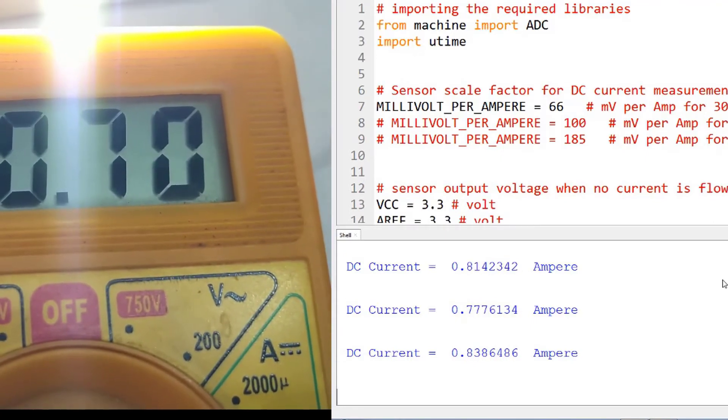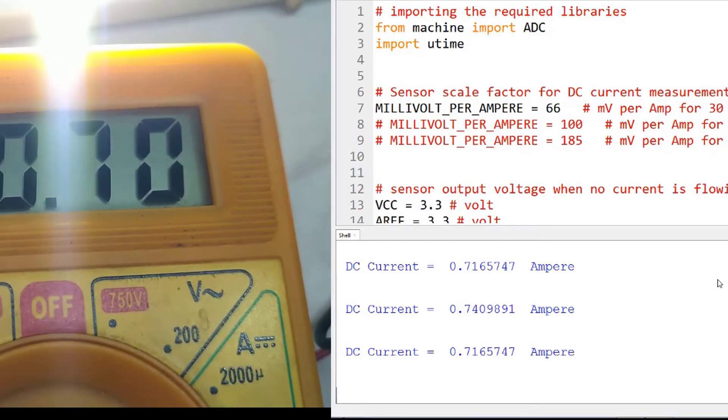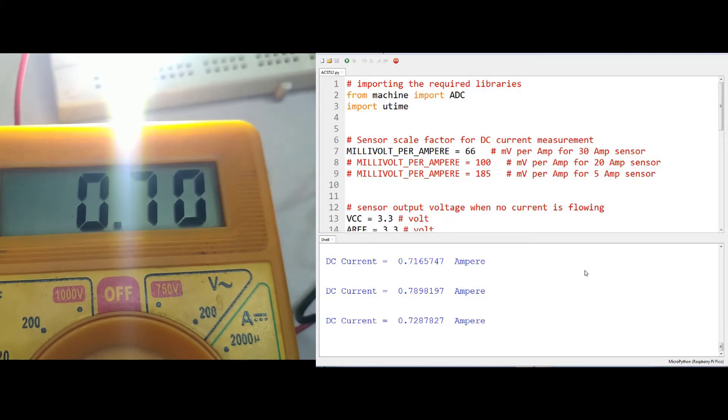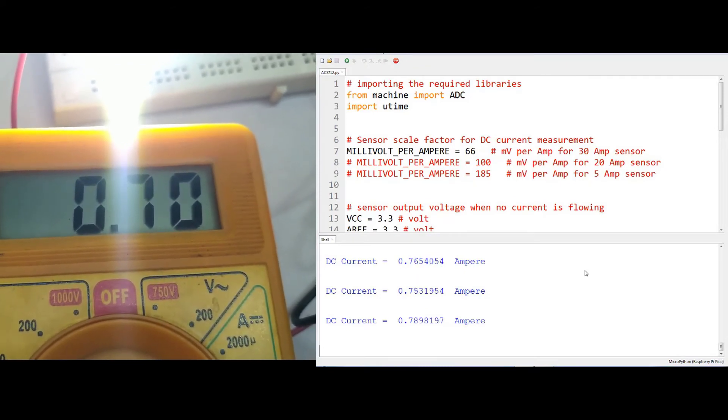So you can say that the values are pretty much accurate for most DIY purposes. So this is the demonstration and I will now tell you about the MicroPython code and the circuit diagram.